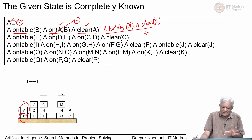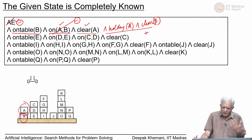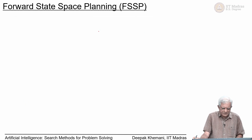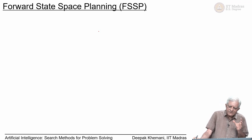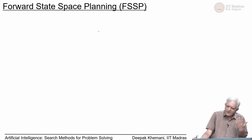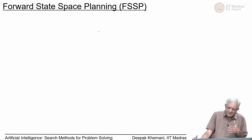When an action is applicable, it changes the current state and moves to a new state. The simplest algorithm is forward state space planning, which corresponds to the search algorithms we have looked at: start from the initial state, generate its neighbors, go to one of them, and so on. This is what we call forward state space planning, and we will take that up in the next session.